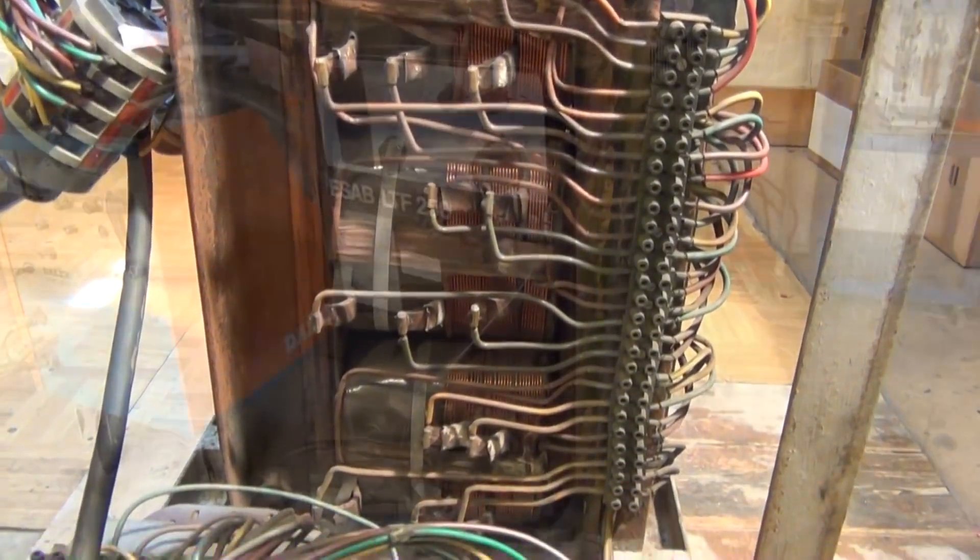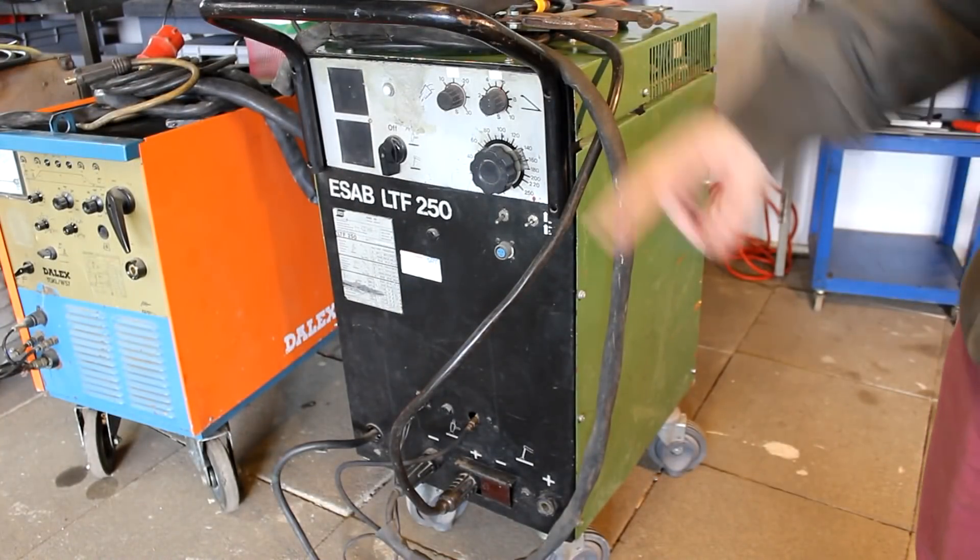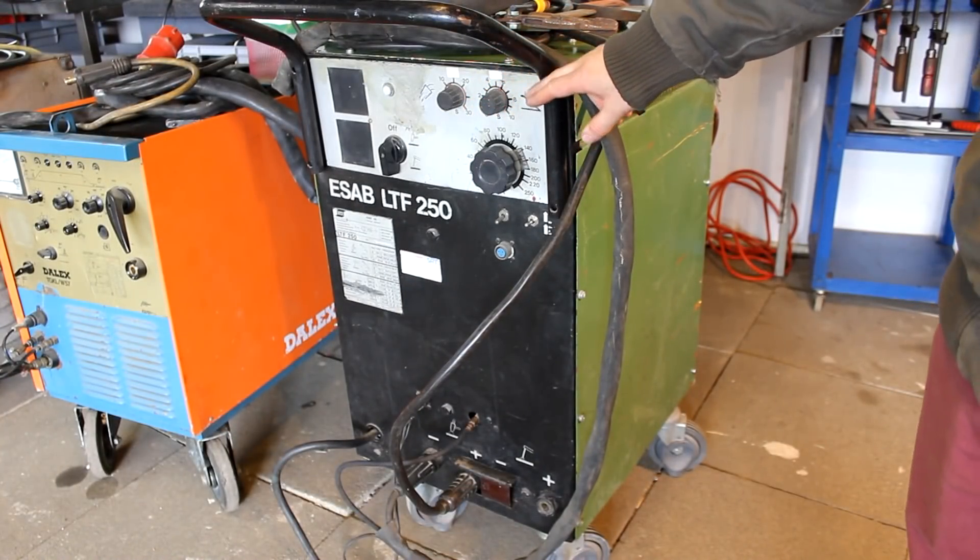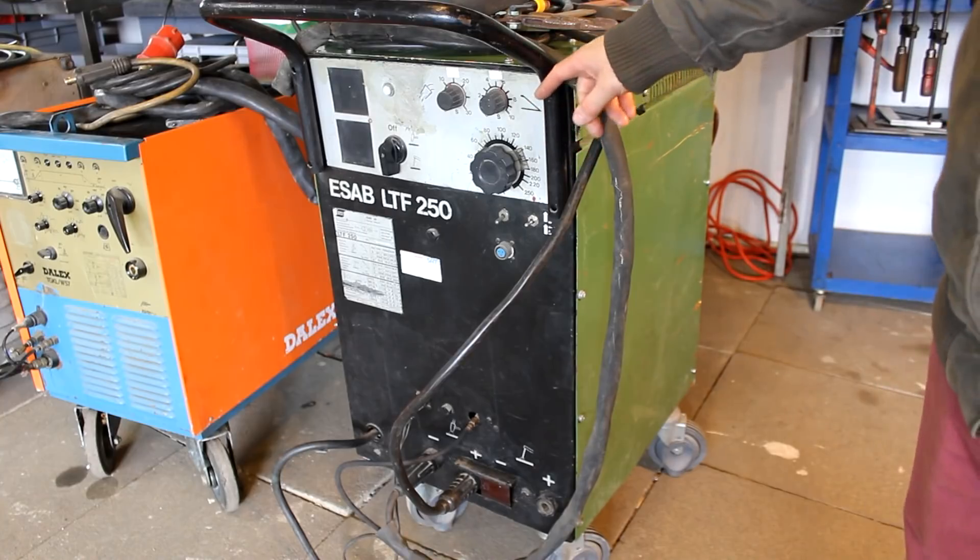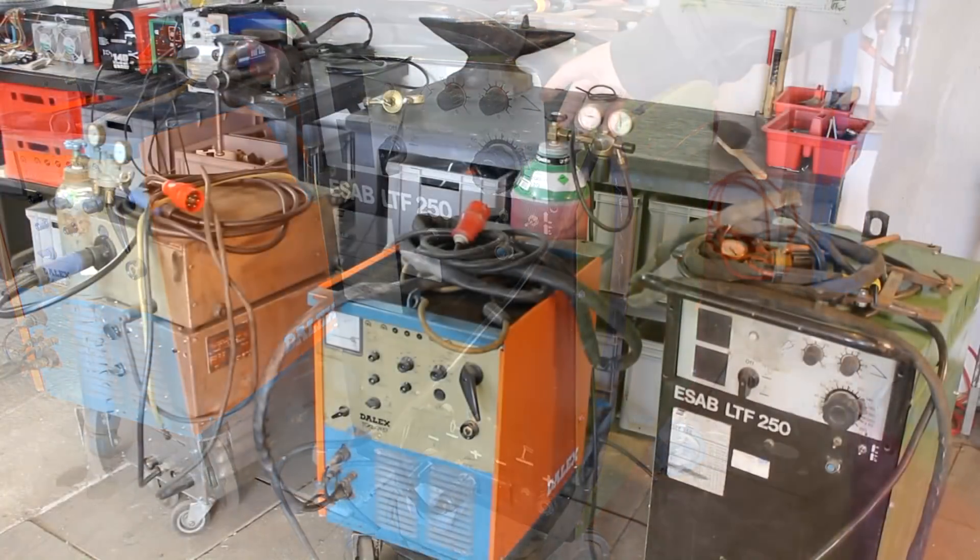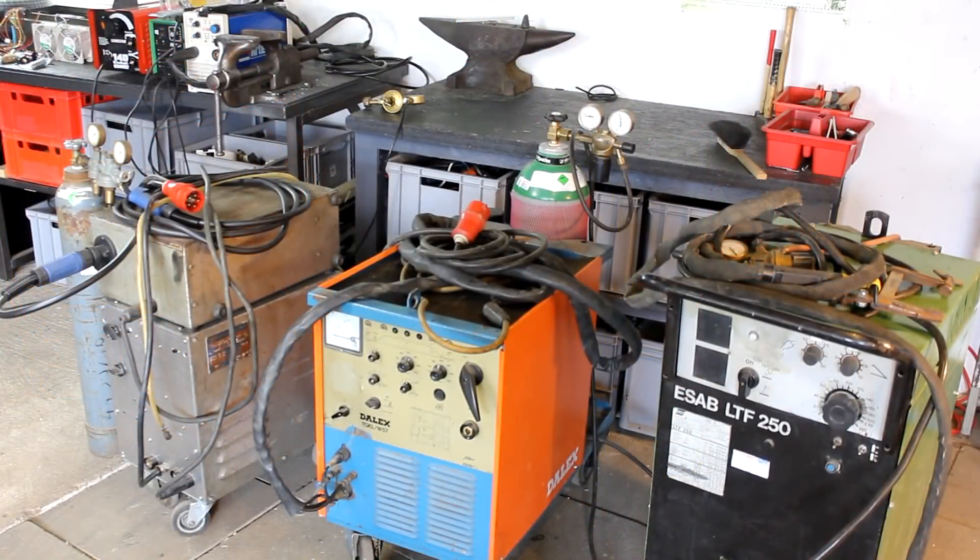Today we're now going to take apart this 250A ESAB brand Swedish TIG welder and figure out how it works. So just as a quick reminder, what's on a very superficial level?